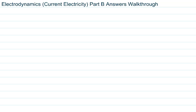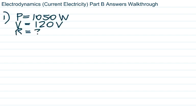This is a recording of the electrodynamics or current electricity part B answers walkthrough. It will be very similar to the part A answers walkthrough, just with different questions. The first question tells us the power of the toaster and the voltage, and wants us to find the resistance.